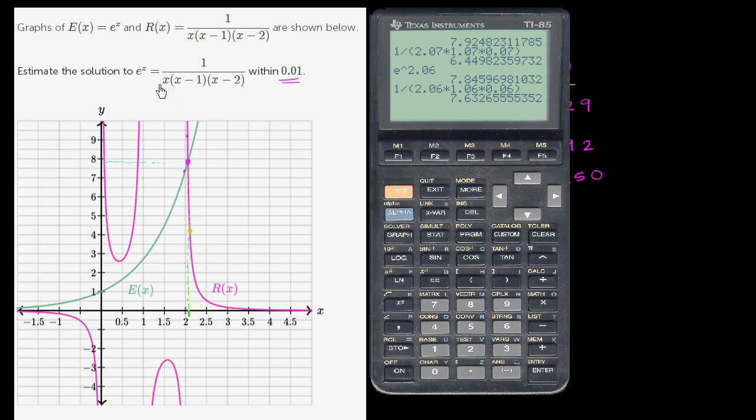In the last video, we estimated the solution to e to the x equals 1 over x times x minus 1 times x minus 2 using a calculator. We got a first rough estimate by just looking at this graph, and then we tried values out to really zero in on or get close to the x value where this is true. What I now want to do is actually just use the graphing functionality of this calculator to try to estimate the solution graphically.